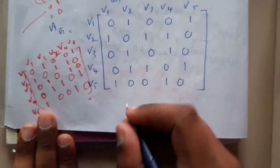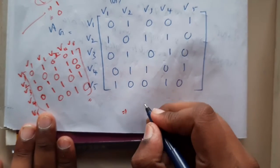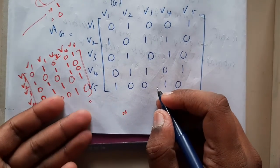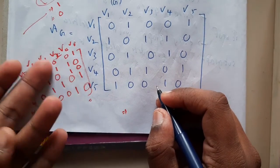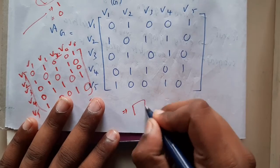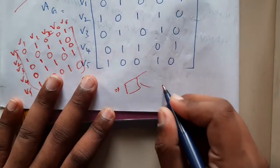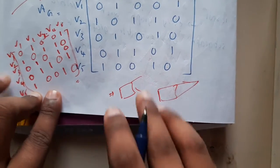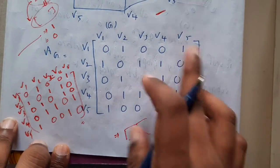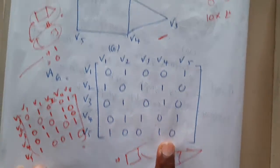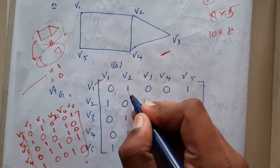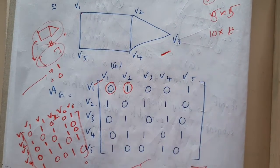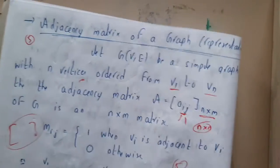The application of the adjacency matrix is that whenever you solve problems using algorithms and write a program in C or any other programming language, you cannot give a graph drawing as input. You cannot pass it using a scanner or anything like that. The only way to take the input is the matrix representation — if there is an edge, represent it with 1; if there is no edge, represent it with 0.